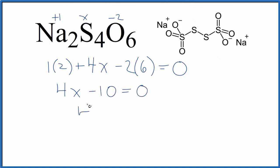Subtract ten from each side, four x equals ten, and then divide by four on each side. We end up with the average oxidation state for the sulfur in Na2S4O6 as ten over four. You could write that as five over two, or convert it to a decimal, 2.5. So the average oxidation state for each sulfur is 2.5.